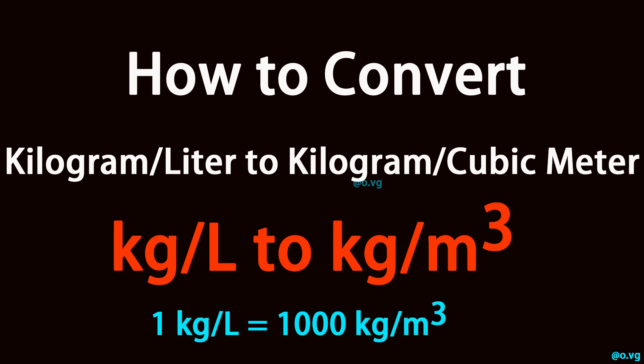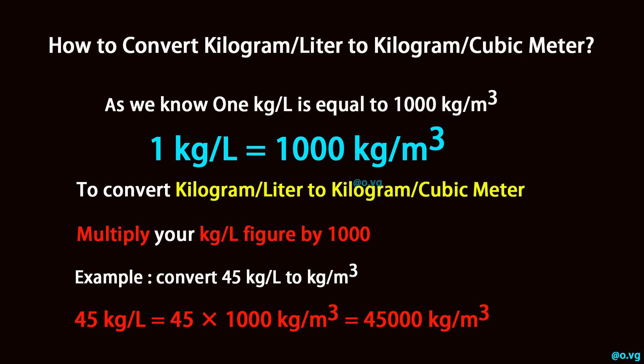How to convert kilogram per litre to kilogram per cubic metre? One kilogram per litre is equal to 1000 kilogram per cubic metre.